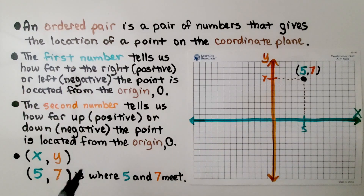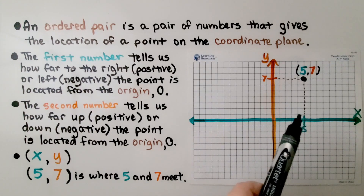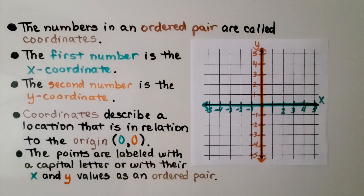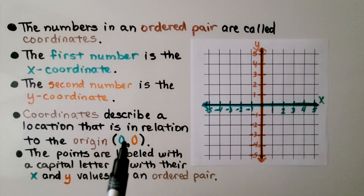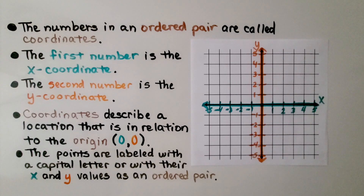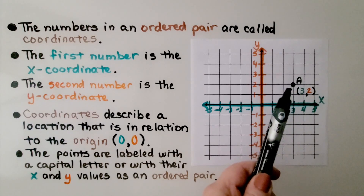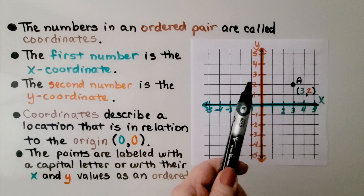We have x and y as our ordered pair. The ordered pair five, seven is where five on the x meets seven on the y — they meet right there. The numbers in an ordered pair are called coordinates. The first number is the x-coordinate and the second number is the y-coordinate. Coordinates describe a location in relation to the origin, which is zero, zero. Points are labeled with a capital letter or with x and y values as an ordered pair — for example, point A or the ordered pair three for x and two for y.